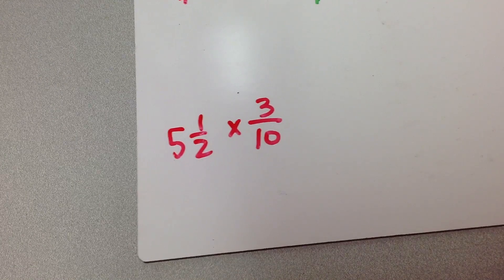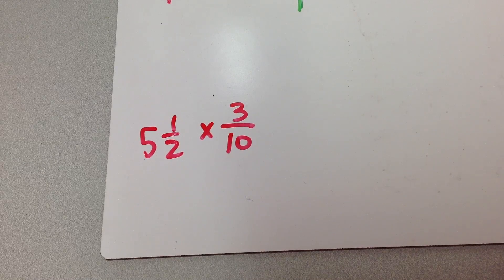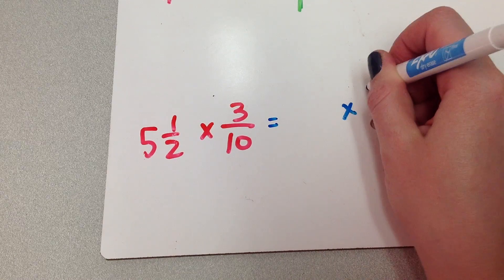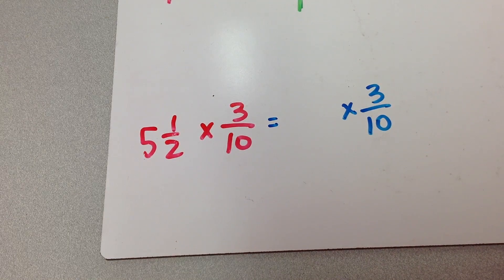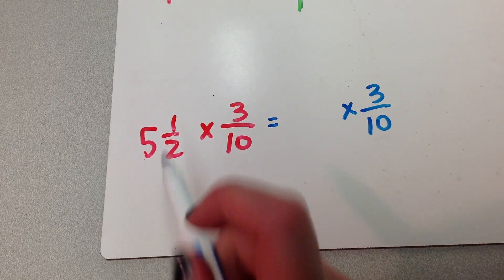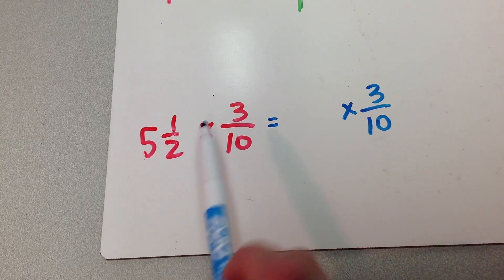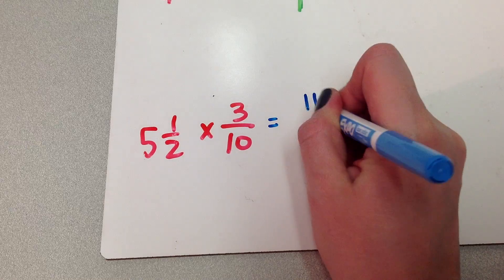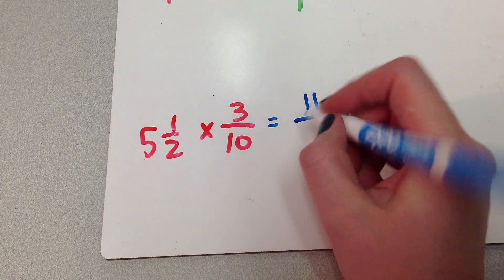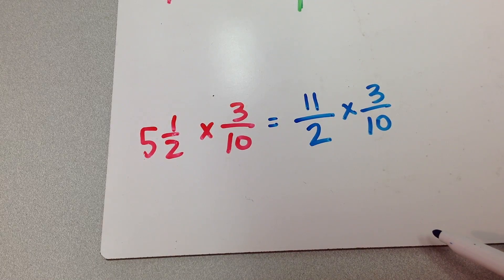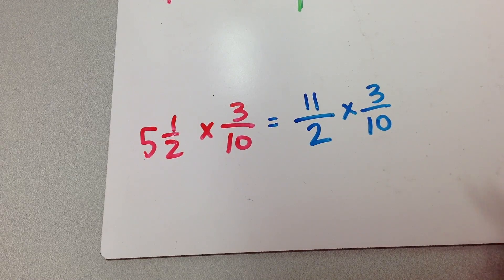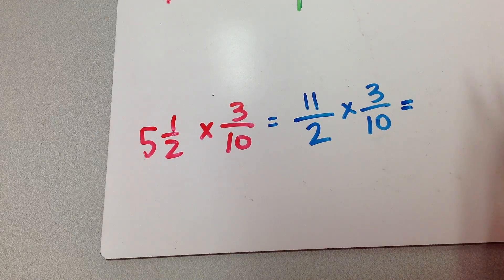Let's look at another example: 5 and 1 half times 3 tenths. The 3 tenths, he's okay — he's just a regular fraction. But this 5 and 1 half, I'm going to have to deal with because I can't leave it in mixed number form. So I'm going to go 5 times 2 is 10, plus 1 is 11. 11 is my new top number, my bottom number stays the same. So now I've got my new problem. In this one, there's nothing I can cross-cancel, so we'll just have to multiply straight across.